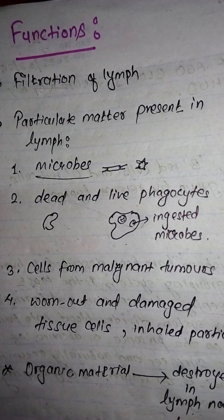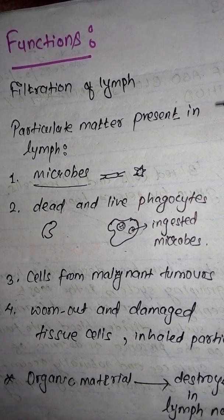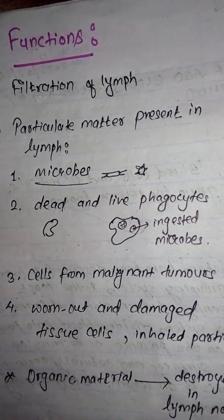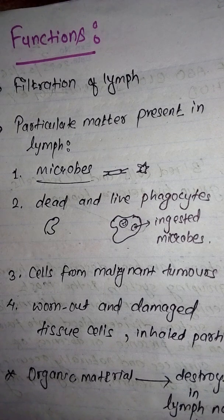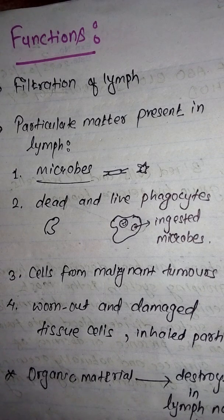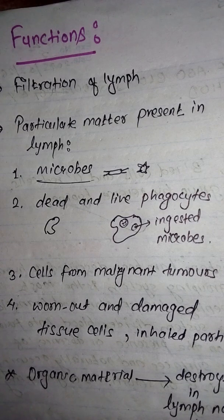The first function of the lymph node is filtration of lymph. Inside the lymph, foreign invaders like microbes may be present. Our body has developed a mechanism to kill these microbes and protect itself. Different types of checkpoints are present for filtering the lymph — just like when we go to the airport and our bags are checked. Lymph nodes are present all over the body with the sole purpose of filtering the lymph.